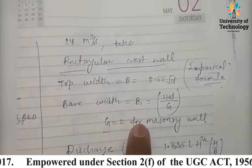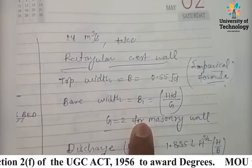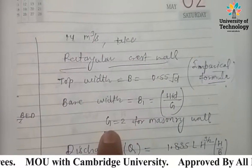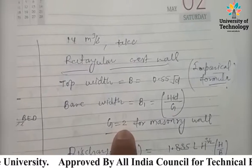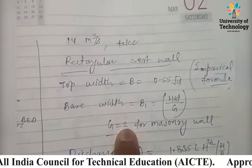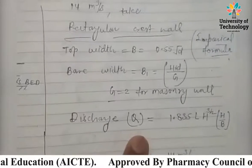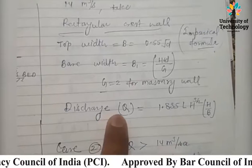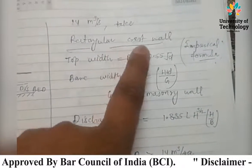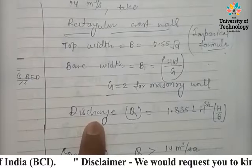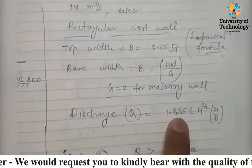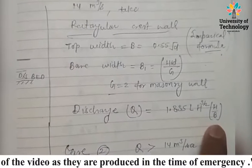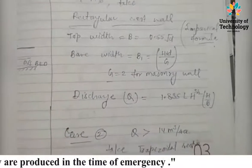Capital G equals 2, representing the specific gravity of the material used in construction of the crest wall. For the rectangular crest wall, discharge Q is calculated by the formula: Q = 1.835 × L × H^(3/2) × (H / B). This gives us the discharge for the rectangular section.